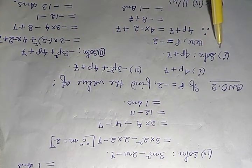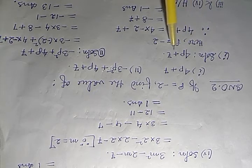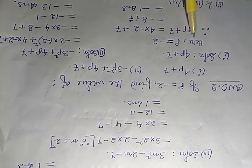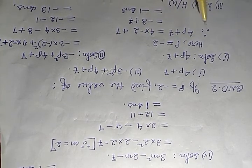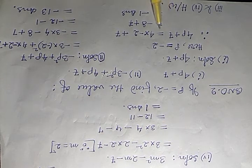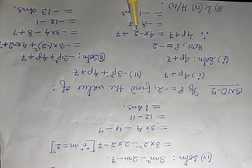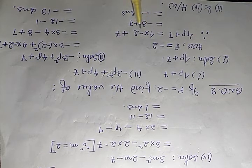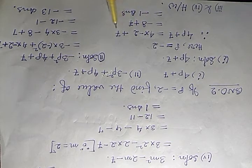Roma number 1 solution. Given p equals minus 2. By substituting the value of p, you write here 4 into minus 2 plus 7.